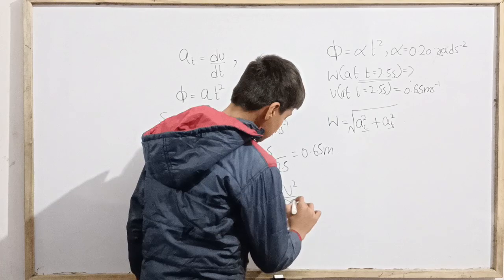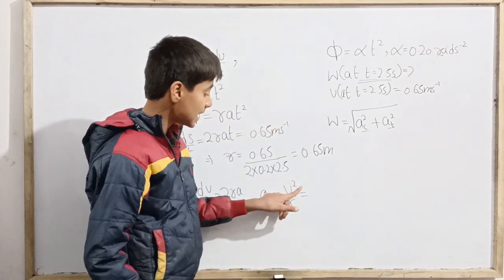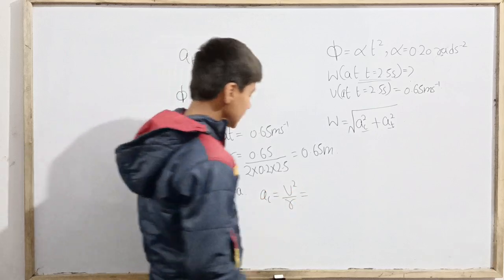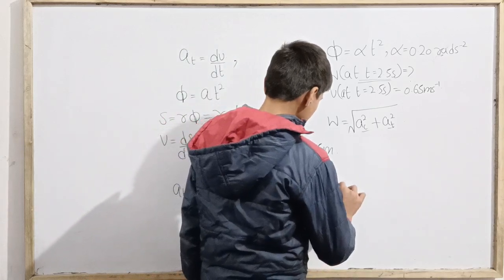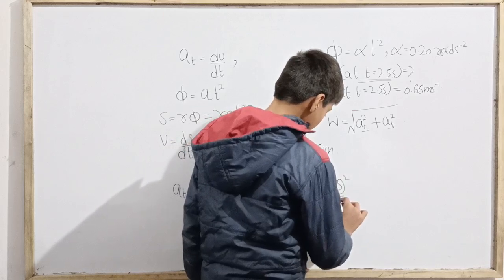Centripetal should be also at 2.5 seconds. So centripetal acceleration is linear speed at 2.5 seconds squared divided by r. So 0.65 squared over 0.65.